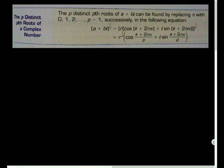So in the previous example, we had cubed roots, so there would be 3 cubed roots of a complex number. If this was 5th roots, there would be 5 5th roots. So the pth roots of a + bi can be found by replacing n with 0, 1, 2, all the way up to p minus 1, or 1 less than what your root is. So in our case, I would have plugged in 0, 1, and 2 if I wanted to find the other roots, not just the principal one. So plugging those in successively in the following equation.